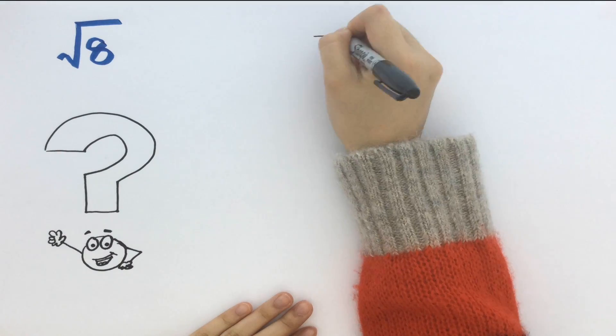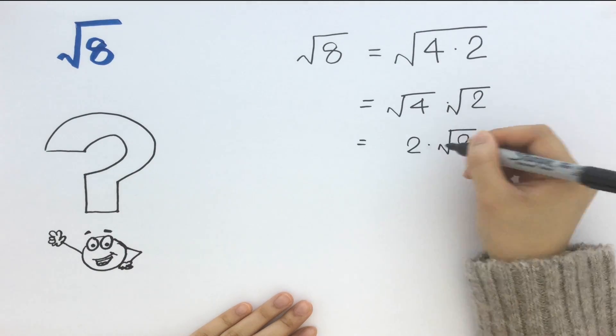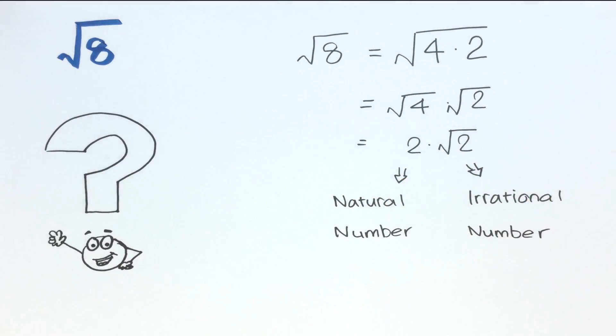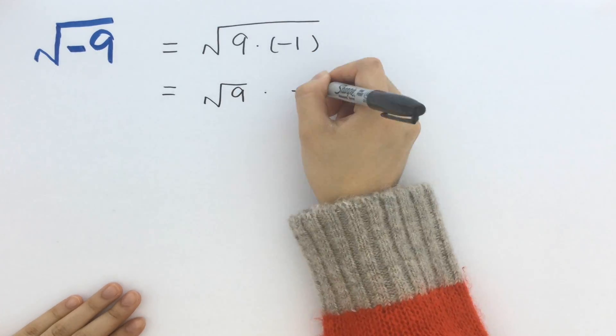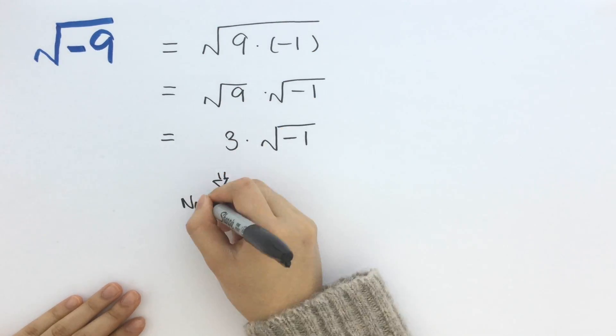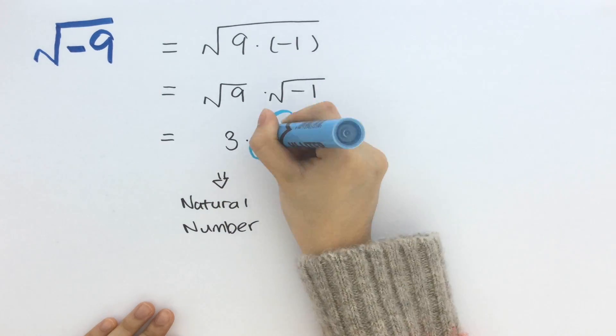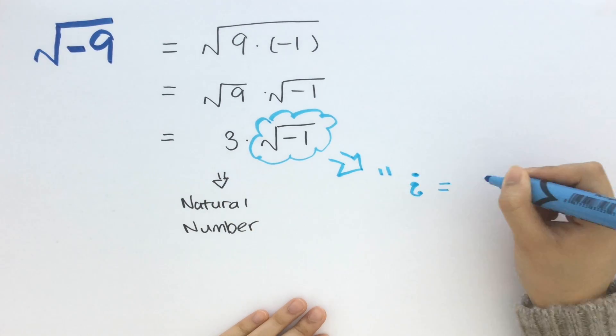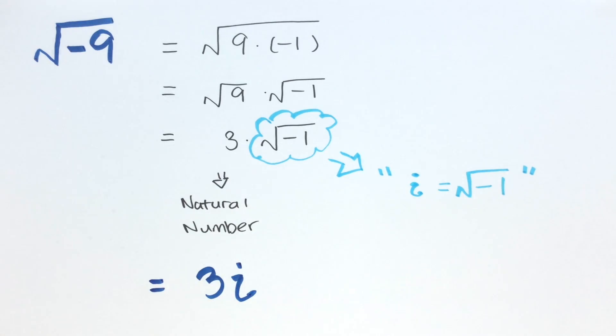We can break the square root of 8 into the square root of 4, which is 2, and the square root of 2, which is irrational. Like the square root of 8, he separated the square root of negative 9 into the square root of 9, which is 3, and the square root of negative 1, which he assigned the value of i. Thus, the square root of negative 9 is 3i.